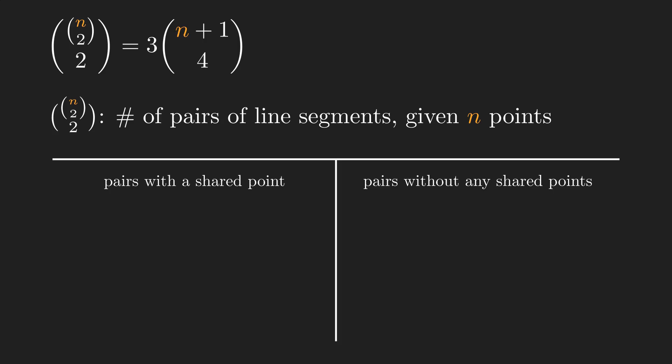If the two line segments share a point, we first need to select 3 points out of n. There are n choose 3 ways to do so. Once we have the 3 points, there are 3 possible ways for drawing 2 line segments which are shown on the screen. So, overall, there are 3 times n choose 3 pairs of line segments that share a point.